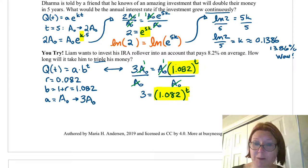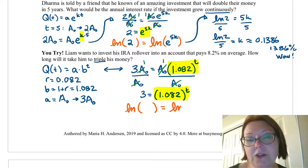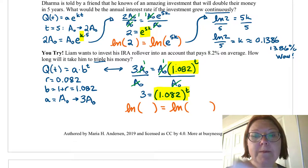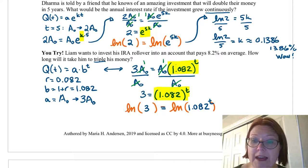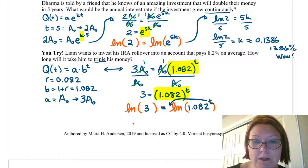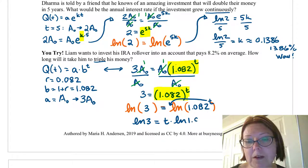So we can take a logarithm on both sides to undo that. And in this case, it doesn't matter what logarithm we take, because we're going to use the exponent property to bring the t in front. So I'm just going to go ahead and take a natural log on both sides. Natural log on the left and natural log on the right. Now I'll drop in the equation from the previous line, giving me natural log of 3 on the left equals natural log of 1.082 to the t on the right hand side. That t in the exponent can go in front of the logarithm using the exponent property of logarithms. And we're left with natural log of 3 equals t times natural log of 1.082.